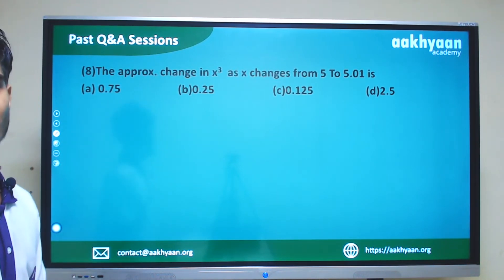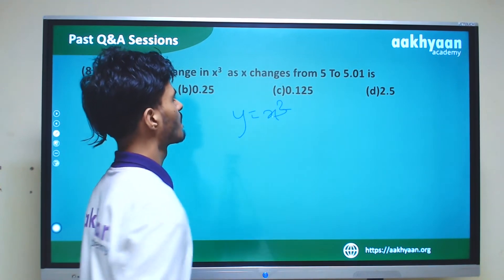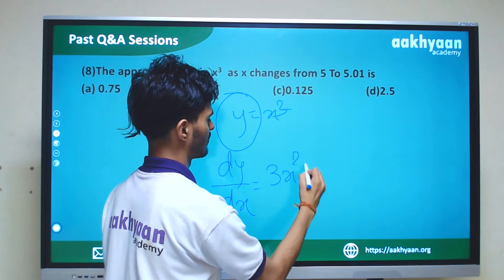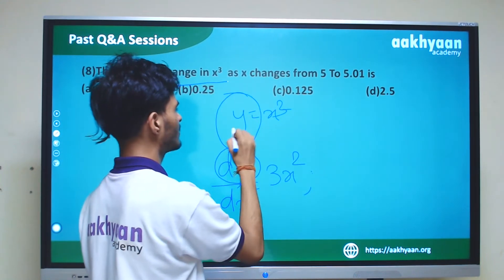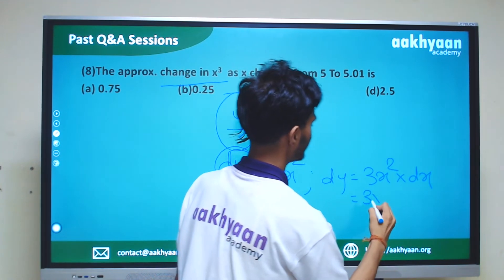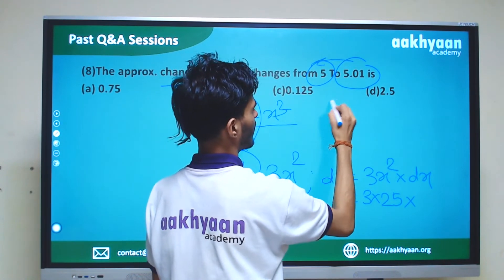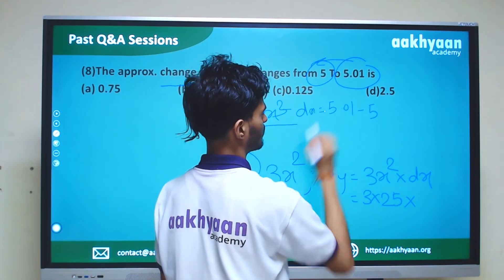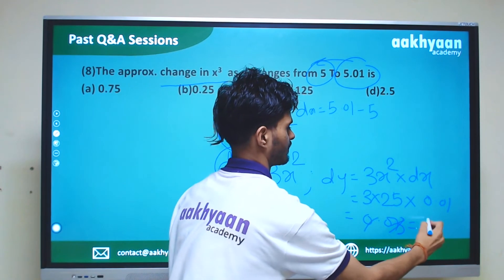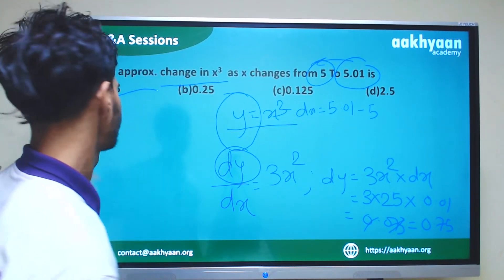In problem 8, we find the approximate change in x³ as x changes from 5 to 5.01. Using dy = 3x² × dx, with x = 5 and dx = 0.01: dy = 3 × 25 × 0.01 = 0.75. So A is the correct answer.